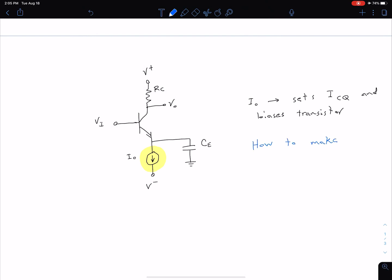How to make this current source I0 with transistors. What we're going to do in the next series of videos is look at various designs of how we can accomplish that, and we're going to talk about the pros and cons of each one.